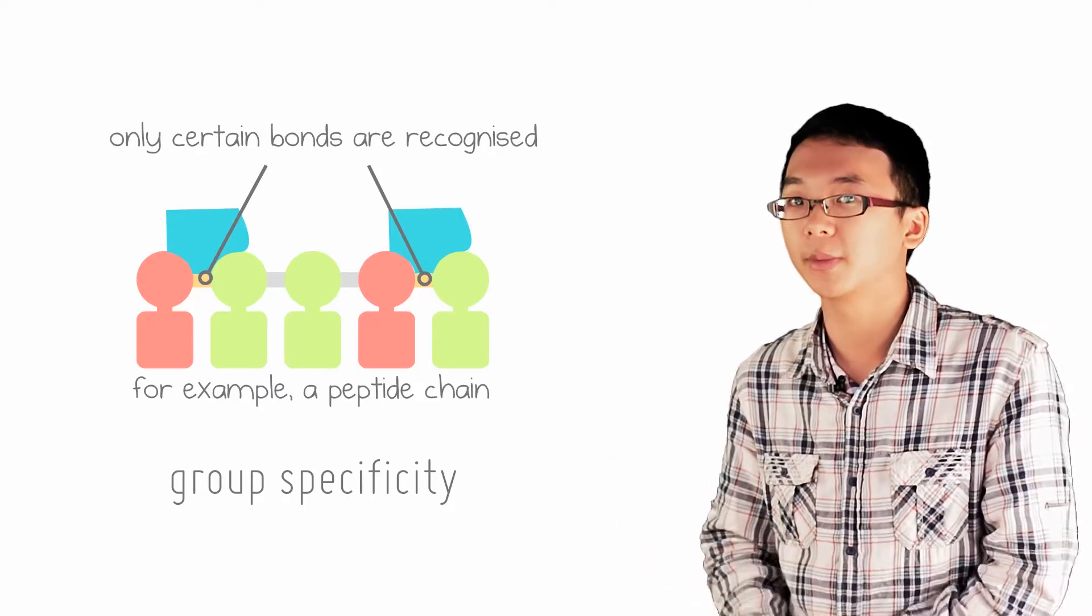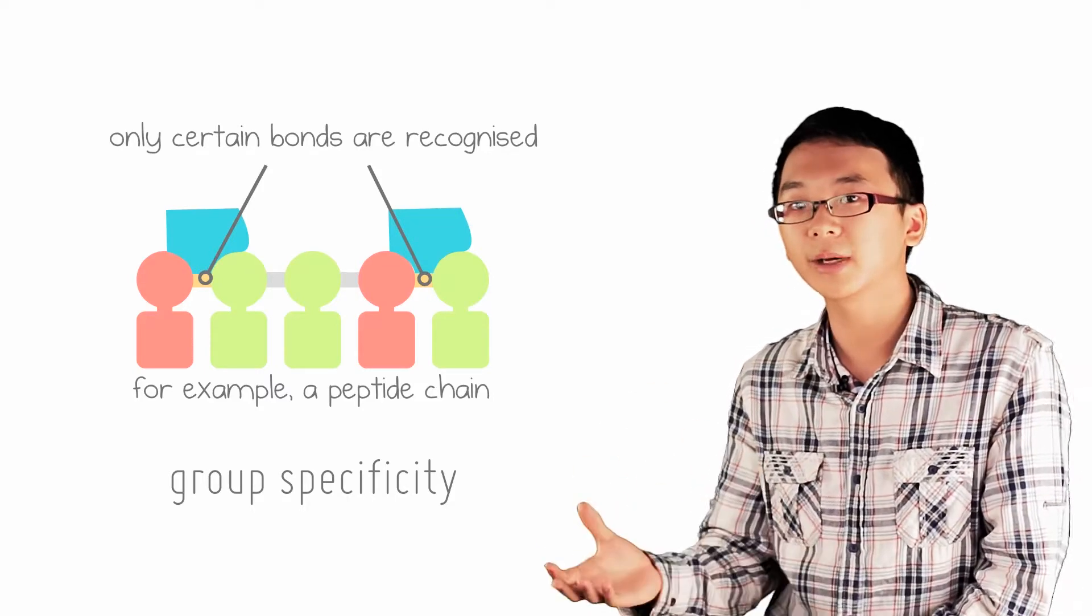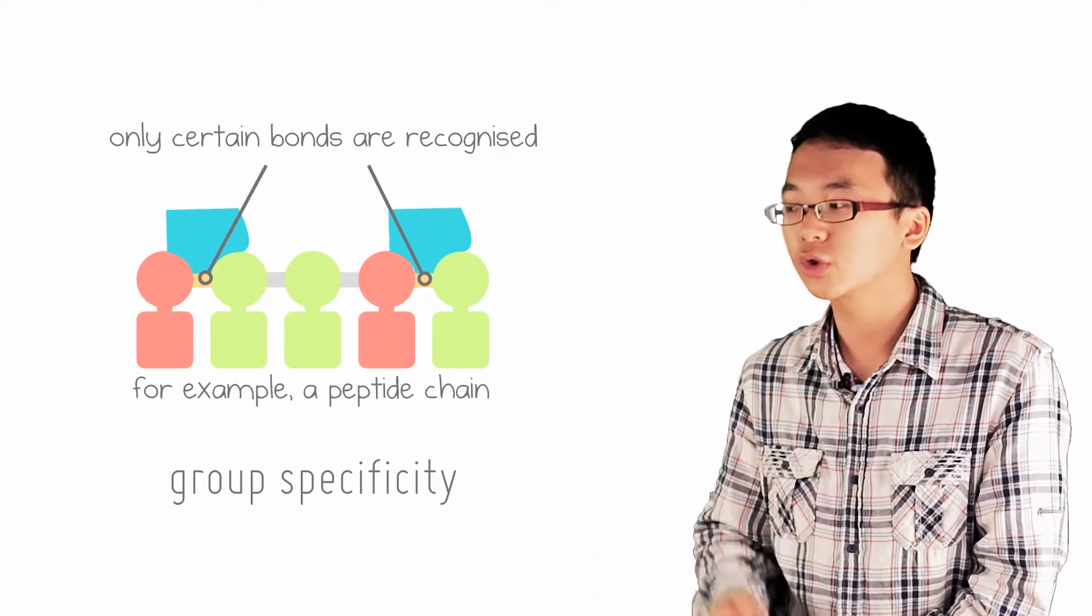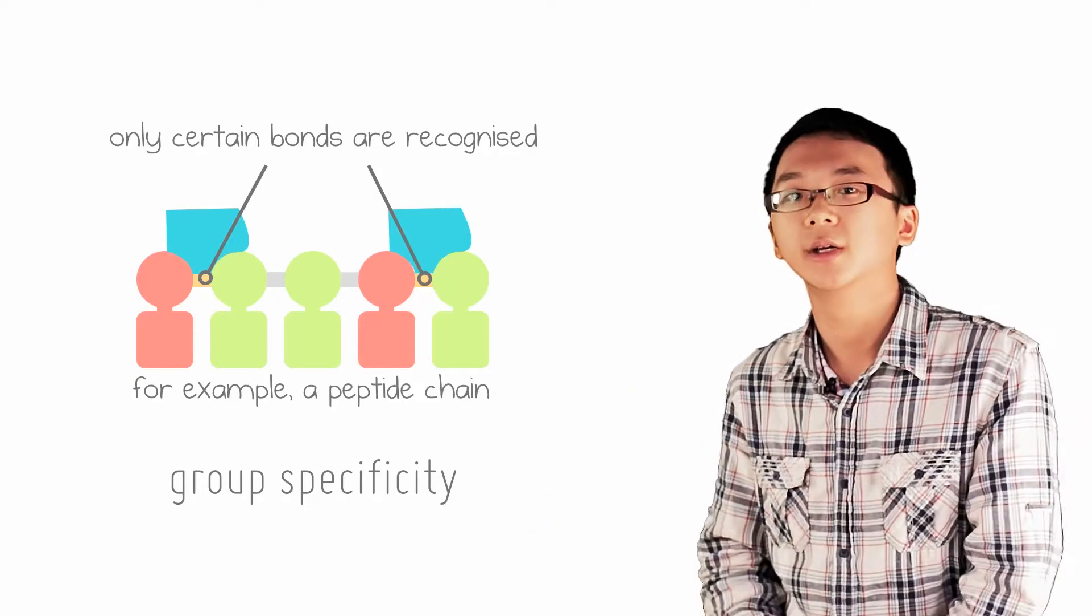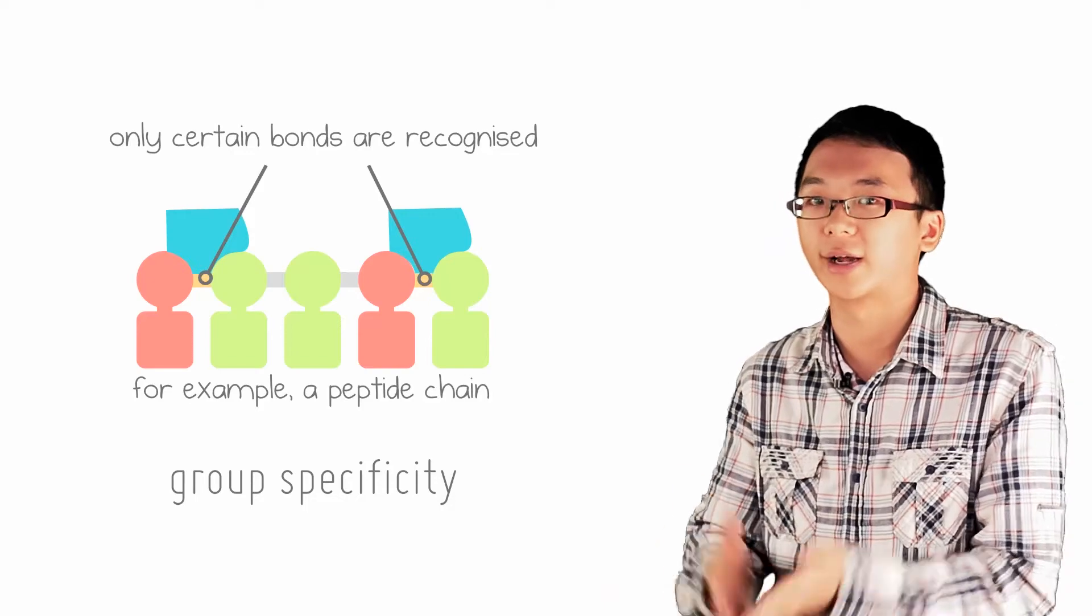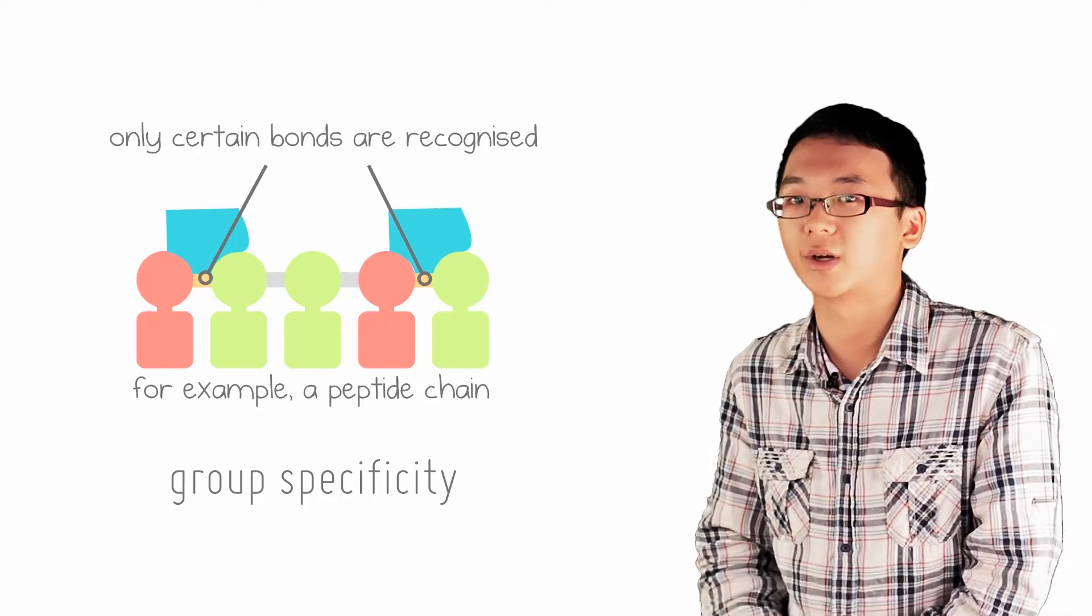Group specificity is normally the case when the active site of the enzyme is complementary in structure and charge to a particular chemical bond. So you can think of it as absolute specificity recognizes the whole substrate, while group specificity recognizes what's in the substrate.